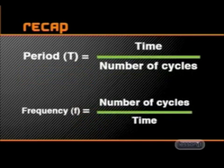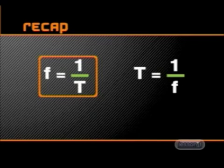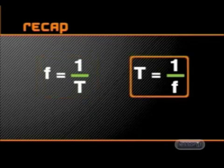By looking at the equations for period and frequency, you should be able to see that frequency is the reciprocal of period. In other words, we can write either F equals 1 over T or T equals 1 over F.